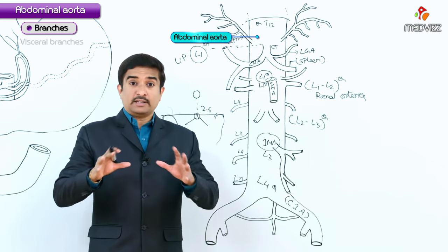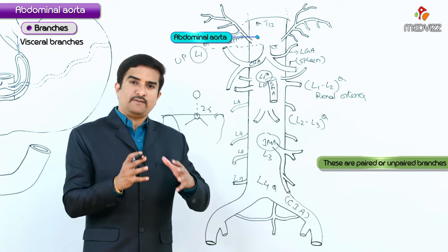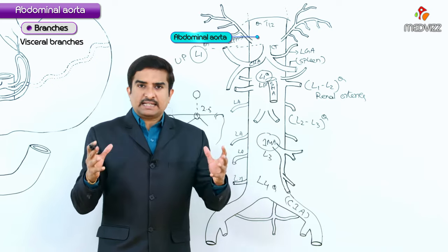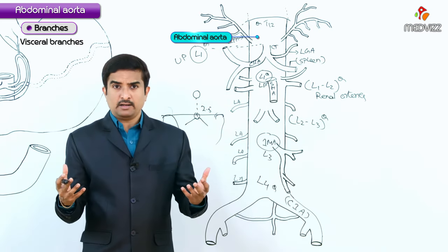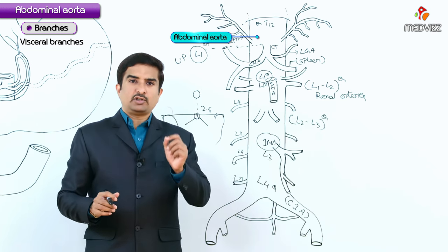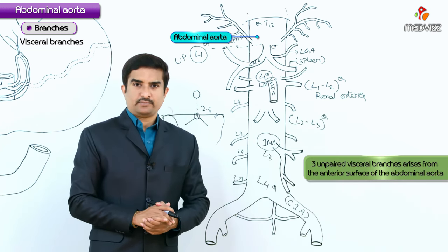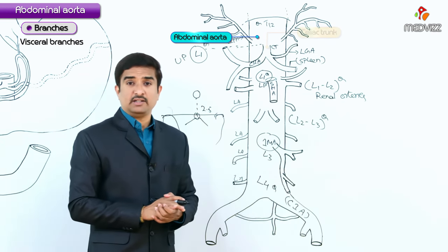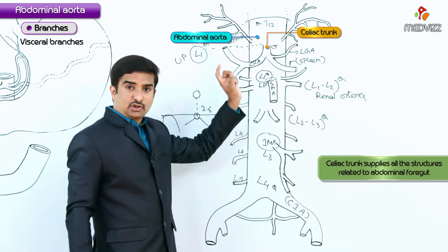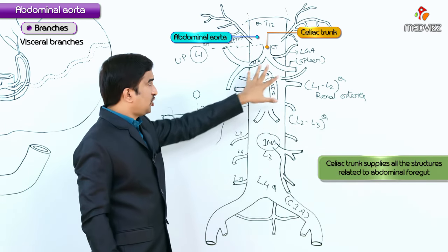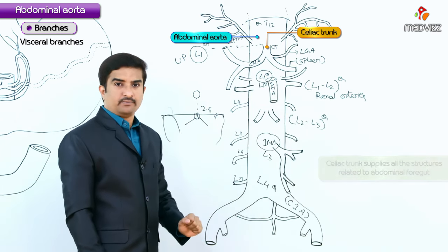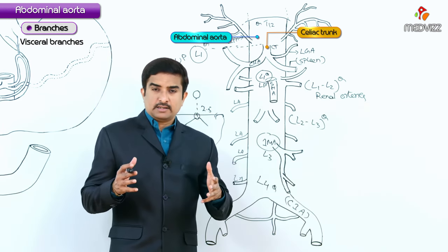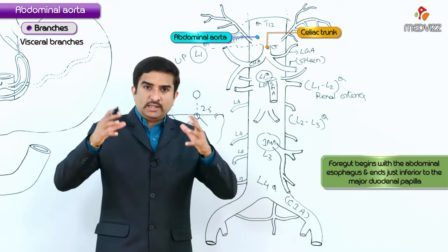Now let us discuss the visceral branches separately. There are totally three unpaired visceral branches that arise from the anterior surface of the abdominal aorta. The first is the celiac trunk. Remember that the celiac trunk supplies all the structures related to the abdominal foregut. The foregut begins with the abdominal esophagus.